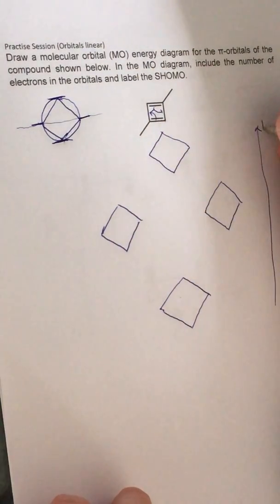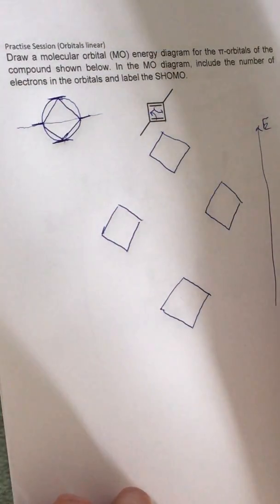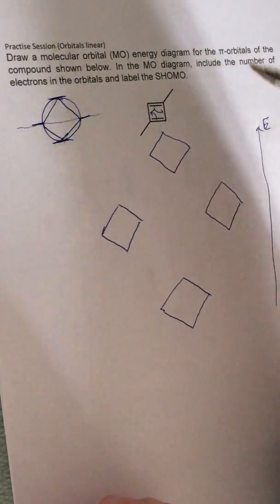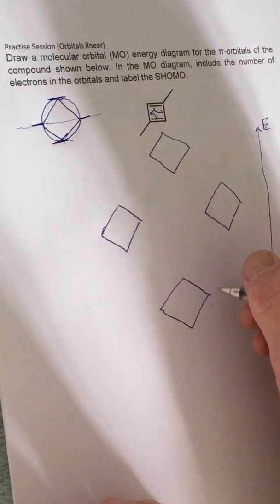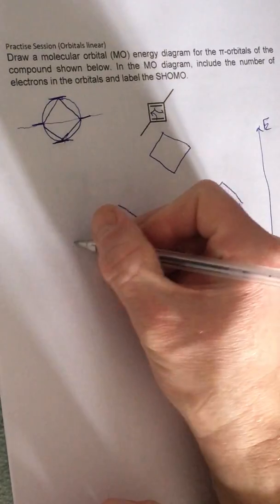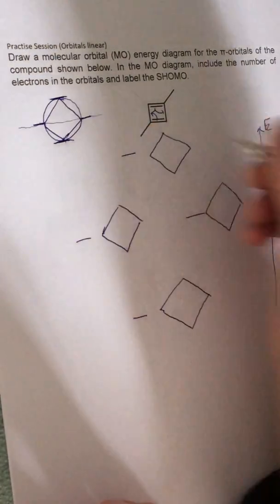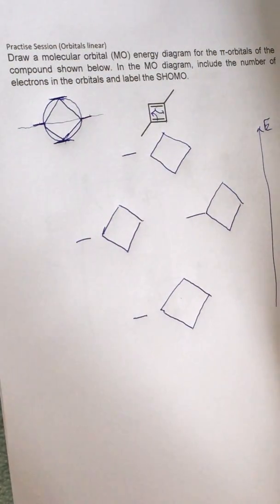And then one at the top. Obviously energy is going up as we go up. And it says label the SHOMO in this case, so we can put a little line beside each one to put our electrons in if there are any to go in there.